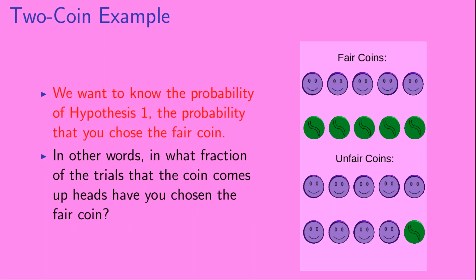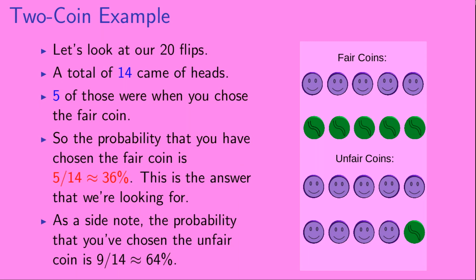So we want to know the probability of hypothesis 1 — the probability that you chose the fair coin — or in other words, in what fraction of the trials that the coin comes up heads have you chosen the fair coin? Looking at our 20 flips, a total of 14 of them came up heads. Five of those were when you chose the fair coin. So the probability that you have chosen the fair coin is 5 out of 14, or 5 fourteenths, or approximately 36%. As a side note, the probability that you've chosen the unfair coin is 9 out of 14, or 9 fourteenths, or approximately 64%.